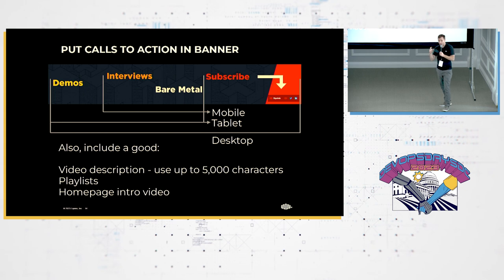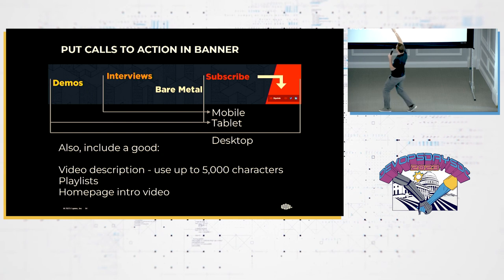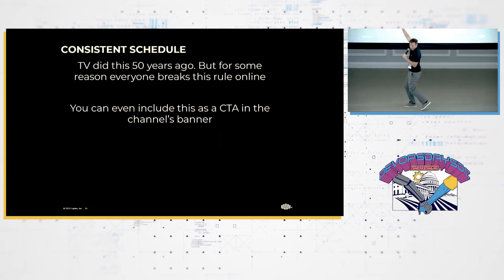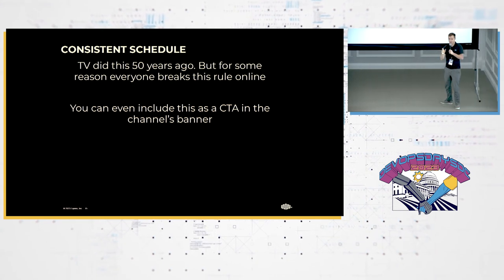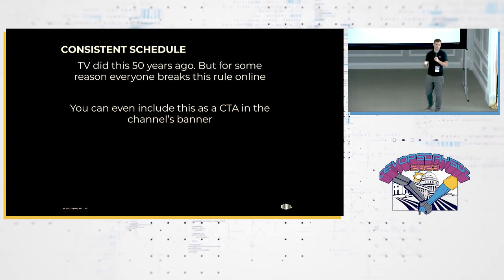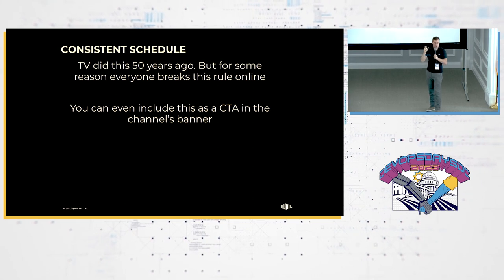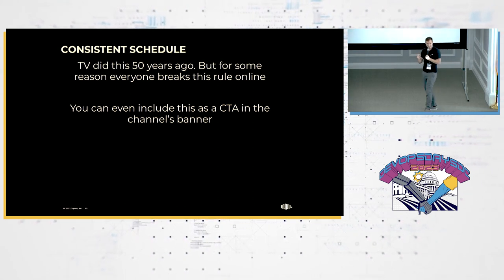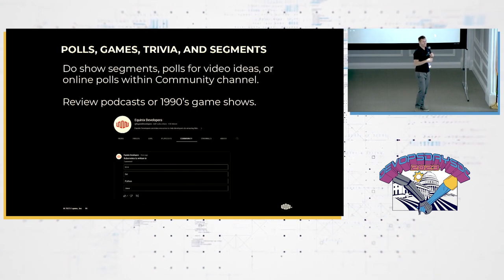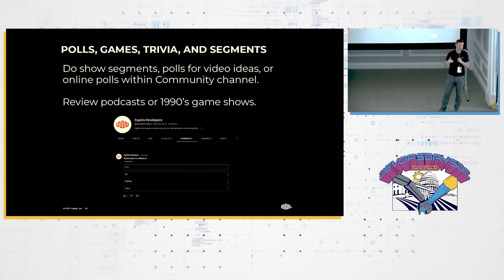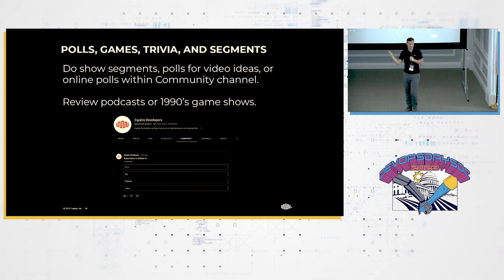Use the banner of YouTube as one big call to action. What shows up on mobile is a portion of the banner, more shows on tablet, and the whole thing shows on desktop. Use that digital real estate for your CTA at the top — either post when you're going to post a video, or get people to subscribe. Stay consistent. TV did this years ago. Something as simple as saying 'new video at 5 p.m. Eastern Standard Time every Thursday' works really well on the internet.